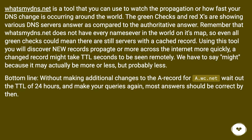Whatsmydns.net is a tool you can use to watch the propagation, or how fast your DNS change is occurring around the world. The green checks and red Xs show various DNS servers' answers as compared to the authoritative answer. Remember that whatsmydns.net does not have every nameserver in the world on its map, so even all green checks could mean there are still servers with a cached record. A changed record might take TTL seconds to be seen remotely — we say 'might' because it may actually be more or less, but probably less. Bottom line: without making additional changes to the A record for a.wc.net, wait out the TTL of 24 hours and make your queries again — most answers should be correct by then.